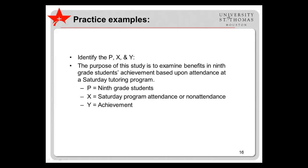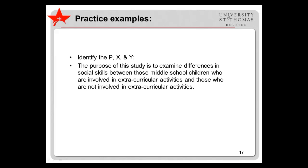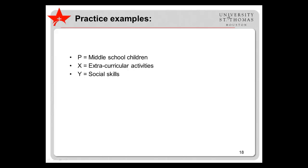Now let's practice stating some hypotheses using this model. P stands for the participants, X stands for the predictor or independent variable, and Y stands for the outcome or dependent variable. The purpose of this study is to examine benefits in ninth grade students' achievement based upon attendance at a Saturday tutoring program. The participants are ninth grade students; the predictor variable is Saturday program attendance or non-attendance; the outcome variable is achievement. Now you try: identify the P, X, and Y in this study examining differences in social skills between middle school children involved in extracurricular activities and those who are not. The participants are middle school children; the predictor variable is extracurricular activities; the outcome variable is social skills.